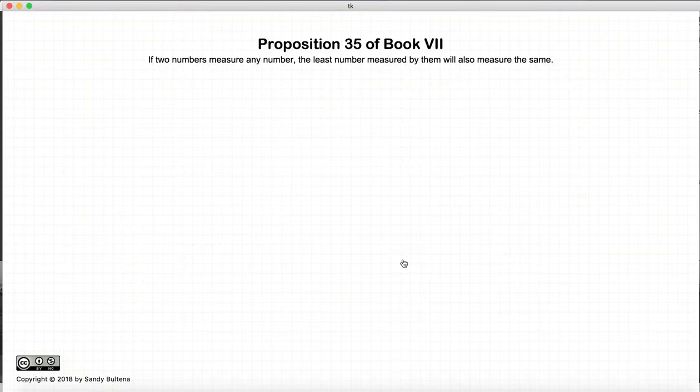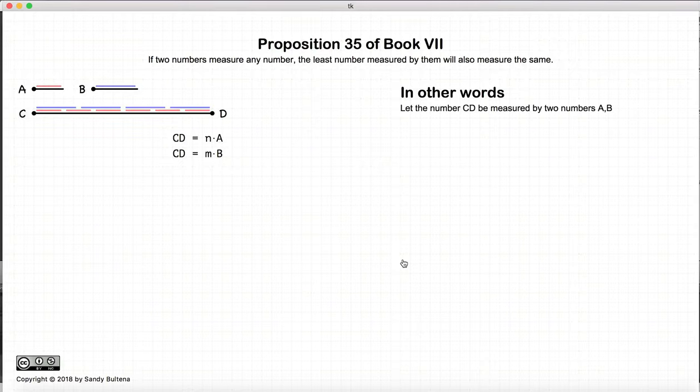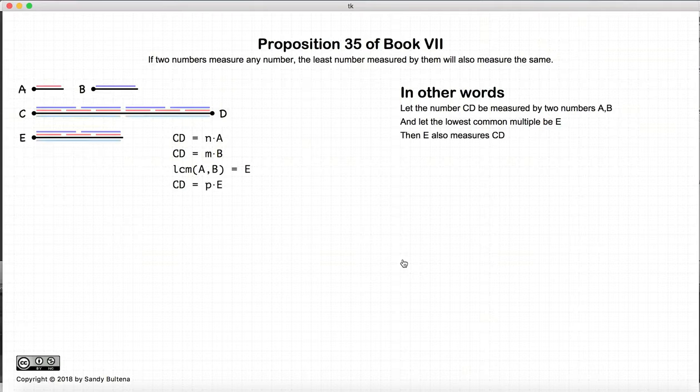This video presentation is going to be on Proposition 35 of Book 7. Now, in this proposition, we have two numbers, A and B, and we have a third number, C, where C can be measured by both A and B. And if E is the lowest common multiple of A and B, this proposition states that E will also measure CD.